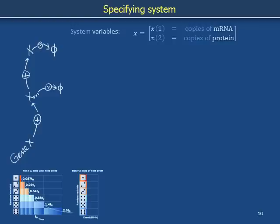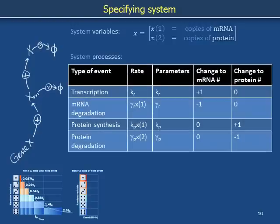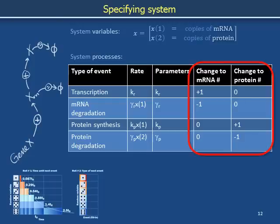In addition to specifying the system's immediate condition, we also need to specify the processes that can change the system's state. The column on the left organizes a list of familiar English names: transcription, messenger RNA degradation, protein synthesis, and protein degradation. To calculate average time rates for these reactions we need parameters, and to specify outcomes we need stoichiometry. For example, transcription corresponds to a change in messenger RNA copy number of plus one and a change in protein copy number of zero — a gain of one copy of messenger RNA with protein level left unchanged.